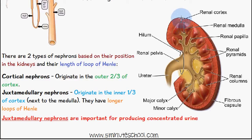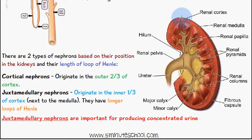The cortex and medulla are visible in the image — cortical nephrons are in the outer cortex region, and juxtamedullary nephrons are closer to the medulla. The loop of Henle of the juxtamedullary nephrons goes deep into the renal medulla, which I'll explain in the dedicated loop of Henle video. Juxtamedullary nephrons have longer loops of Henle and are important for producing concentrated urine.